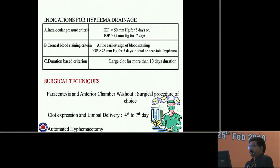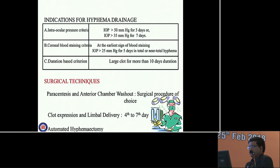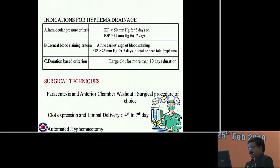Indication for hyphema drainage: IOP criteria - if IOP is more than 50 mmHg for 5 days, or IOP more than 35 mmHg for 7 days. Corneal blood staining criteria: at the earliest sign of blood staining, IOP more than 25 mmHg for 5 days, or total or near-total hyphema. Duration-based criteria: large clot for more than 10 days. Surgical techniques include paracentesis and anterior chamber washout, clot expression and limbal delivery after 4 to 7 days, and automated hyphaema drainage.